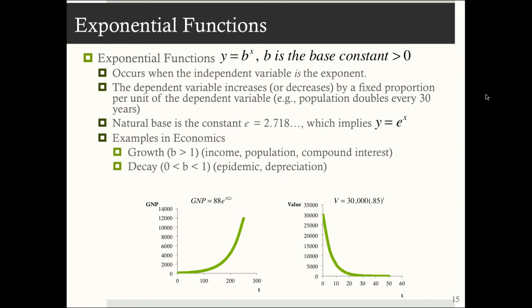So economists use decay models to model epidemics and depreciation. So this model to the right you can consider to be an auto value depreciation model. So once you get a car, and you drive it off the lot, over time that car loses value. And this just models it. So it's telling us that if I were to buy a car at $30,000, that the value of that is going to decrease exponentially over time.